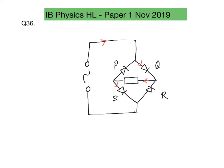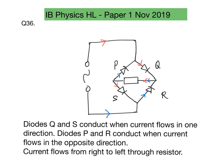If the direction of current reverses, it will conduct to R, pass through the resistor in the same direction, and conduct to P in this direction. The answer is E.